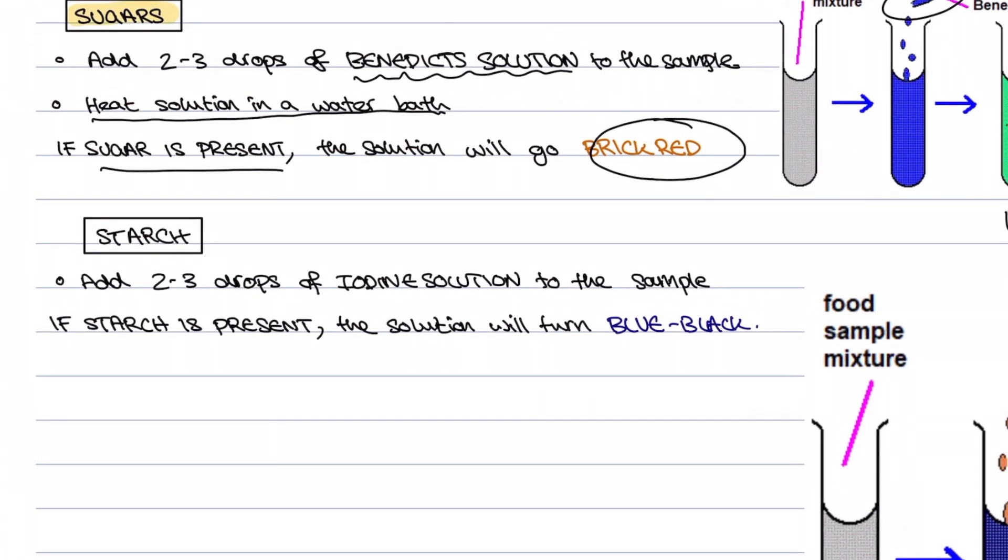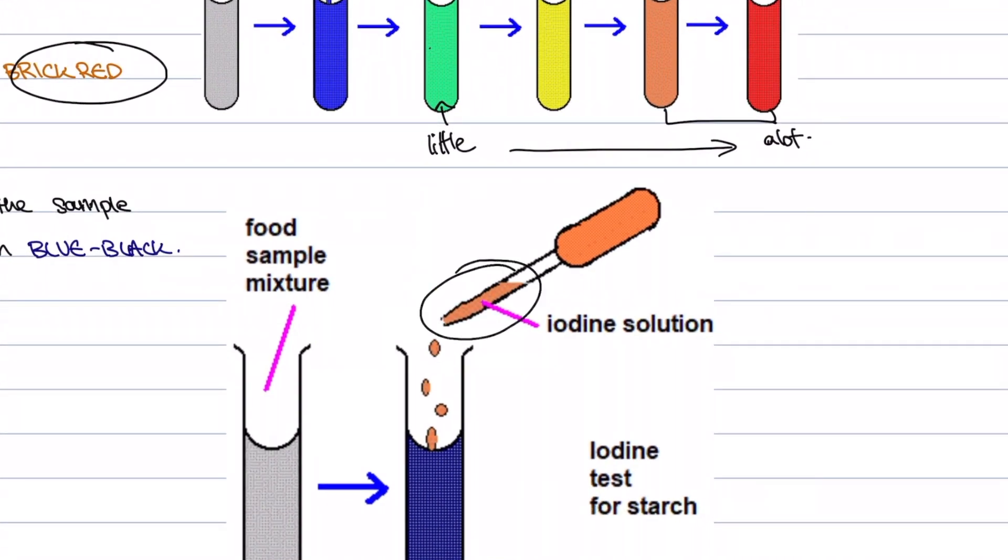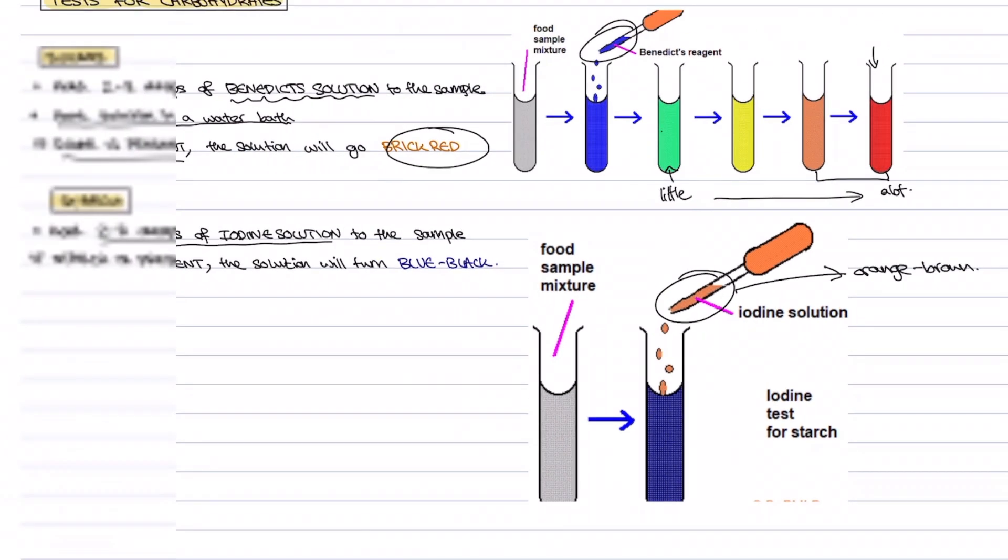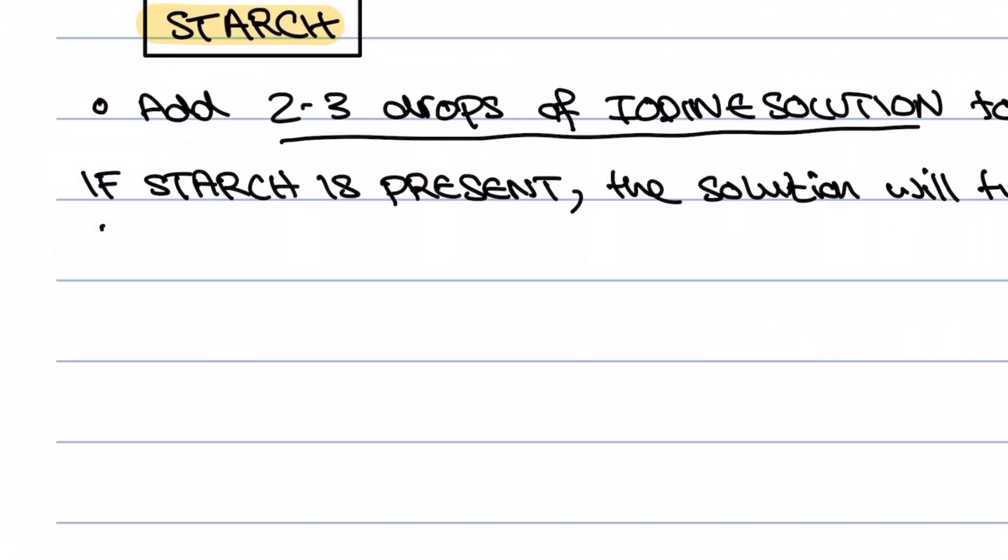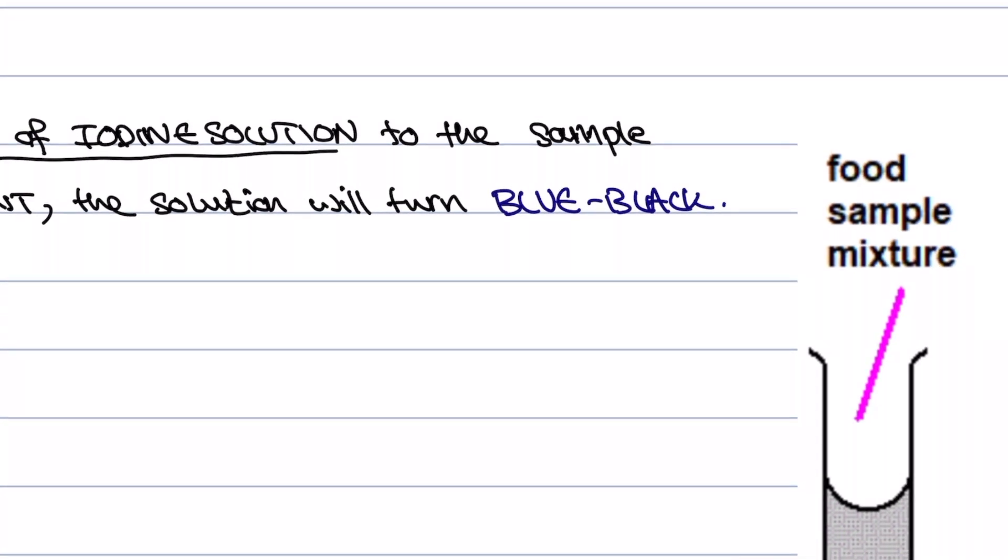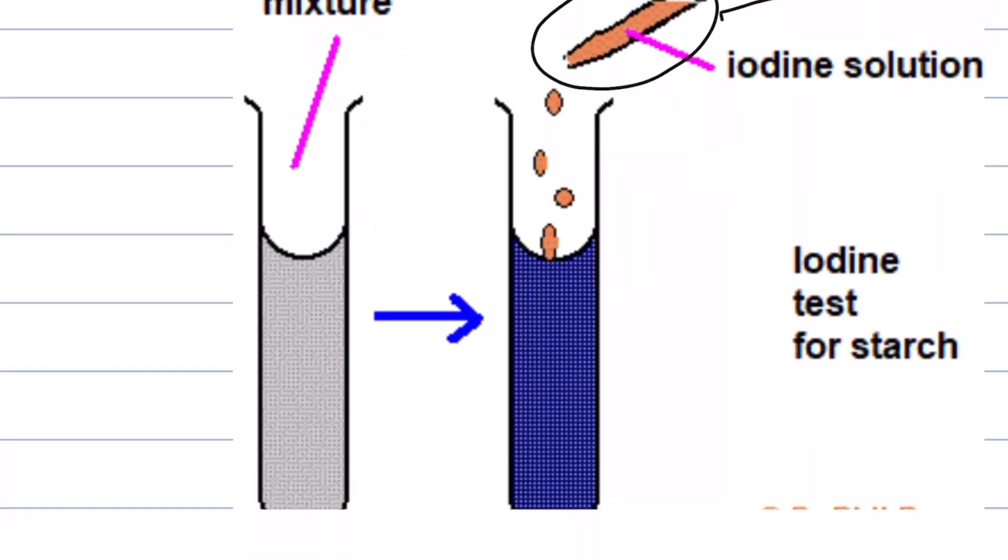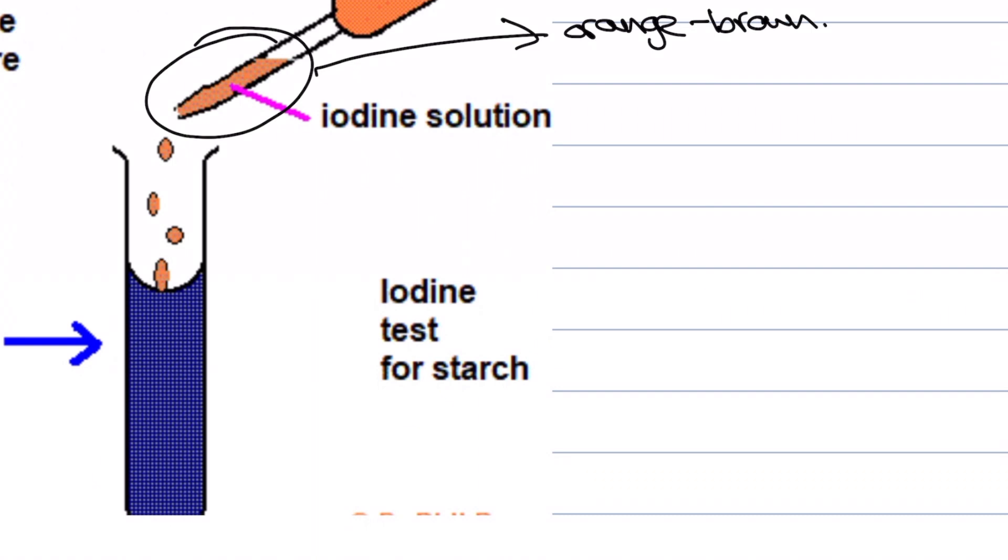For our test for starch what we need to add is two to three drops of iodine solution to the sample. Iodine usually has a sort of orangey brown color to it and we're going to add that to the solution to test for starch and the positive test is if starch is present the solution is going to turn a blue black color. Very similar to the sugar tests, we can have anywhere from a blue down to a black color and that just tells us how much starch is present.